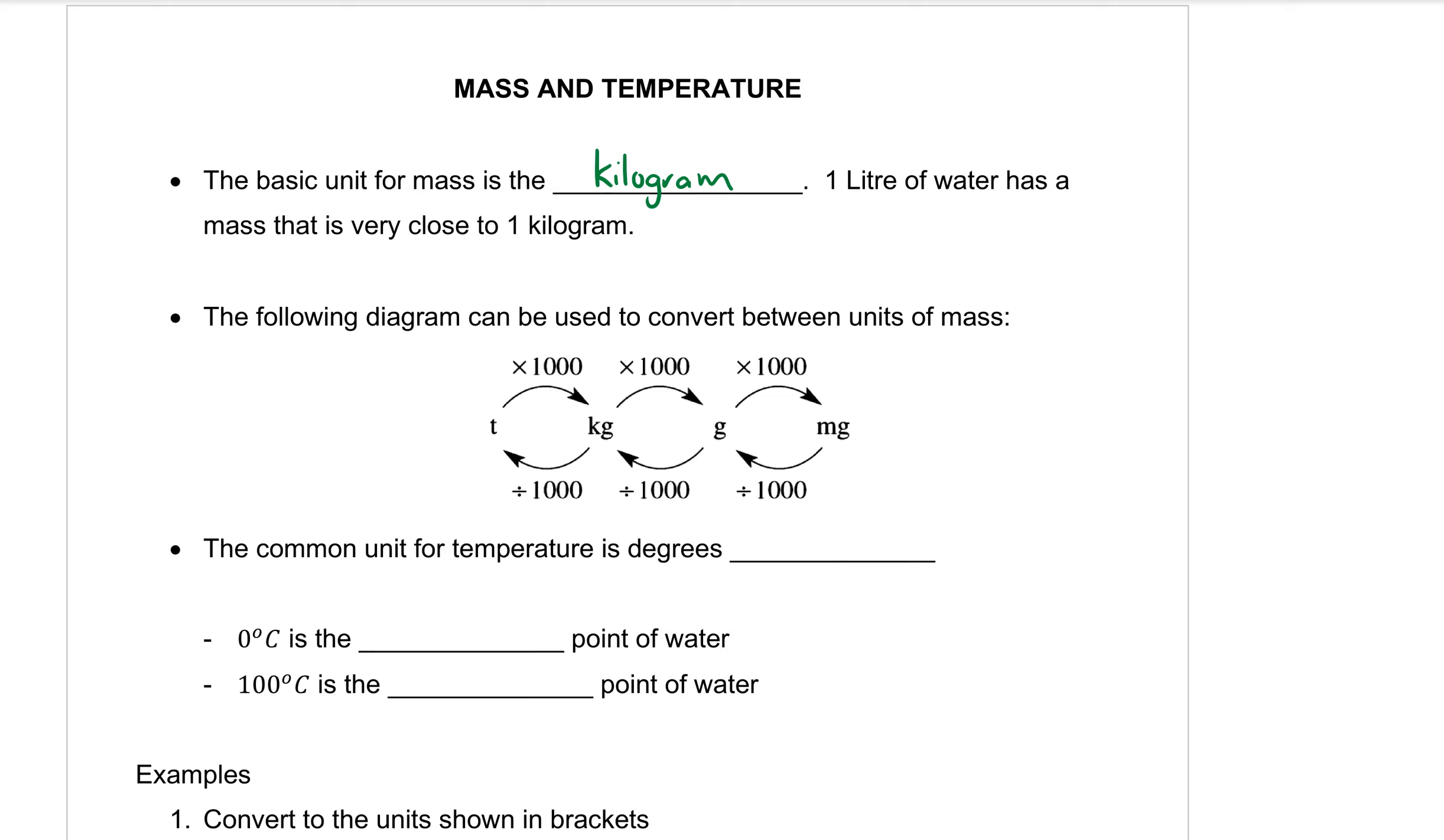The common unit for temperature is degrees Celsius. Zero degrees Celsius, this C is the symbol for Celsius, is the freezing point of water. So water will freeze once it hits zero degrees. And 100 degrees Celsius is the boiling point, that is when water will boil.